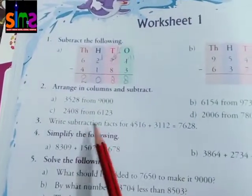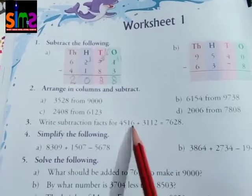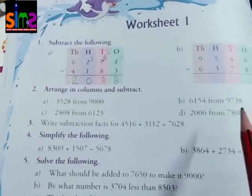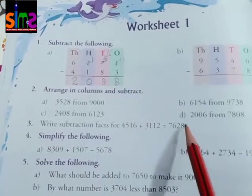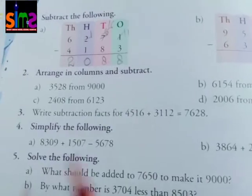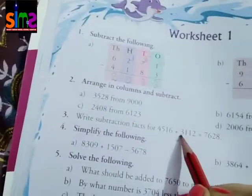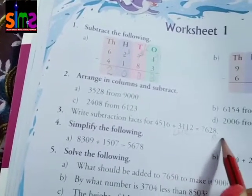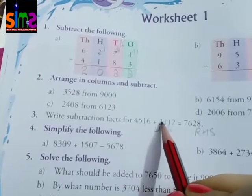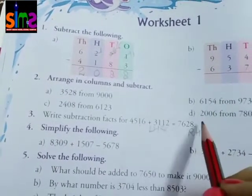Next, you have to write the subtraction facts for 4,516 plus 3,112 equals 7,628. In this equation, you will have two subtraction facts. I'll tell you how to write them. One digit will remain on the left hand side. The other digit will be on the right hand side, and the sign will change. If it is plus, it will become minus.